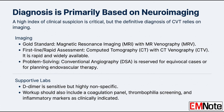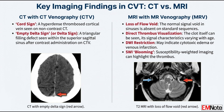MRI takes time, so the rapid imaging modality more widely available is CT with CT venography — CT with CTV. It's fast and accessible. On non-contrast CT, you might spot the hyperdense cord sign if a cortical vein is clotted. But the definitive sign on venography is the delta sign — a triangular filling defect most commonly seen in the superior sagittal sinus, where contrast-enhanced dura surrounds the unenhanced thrombus.